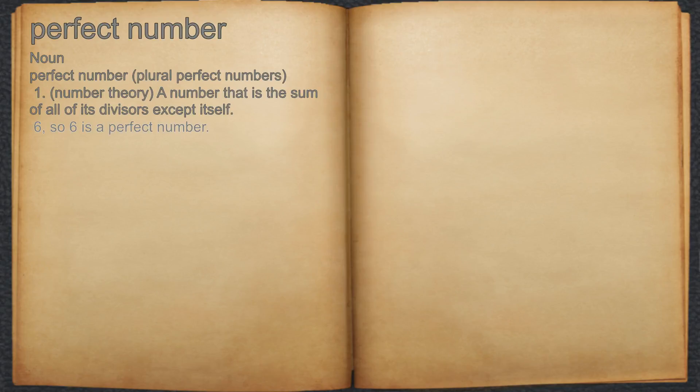For example, the factors of 6 are 1, 2, 3, and 6, and 1 plus 2 plus 3 equals 6, so 6 is a perfect number.